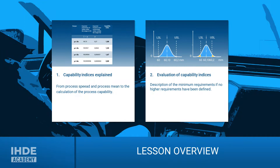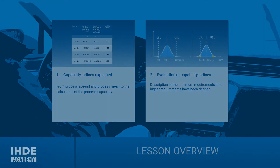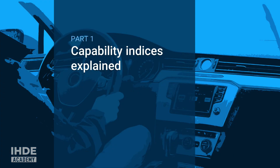This lesson is divided into two chapters. In the first chapter, we look at the essential terms and relationships for calculating the capability indices. In the second chapter, we then assess processes using the capability indices.